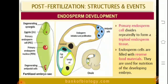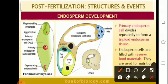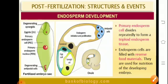Endosperm development is basically of three types: the nuclear endosperm, the cellular, or the helobial type. In the case of nuclear endosperm, which is formed by free nuclear division, the endosperm nucleus divides repeatedly to form the triploid endosperm tissue.